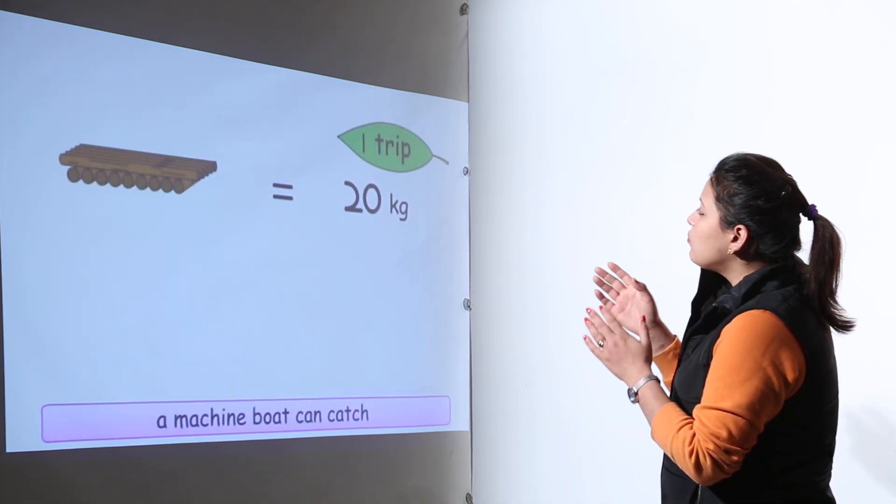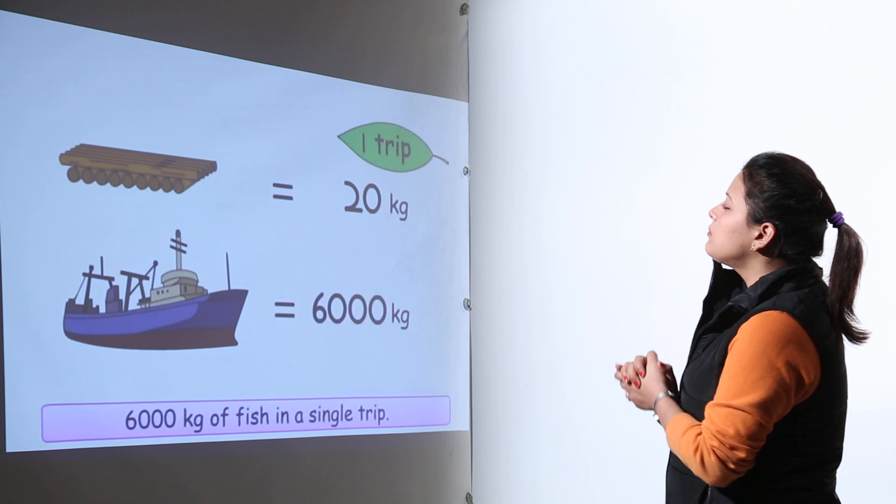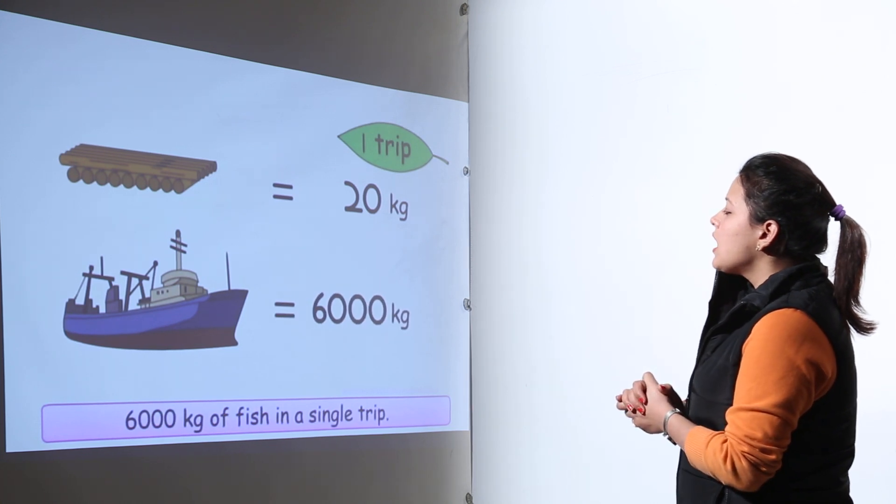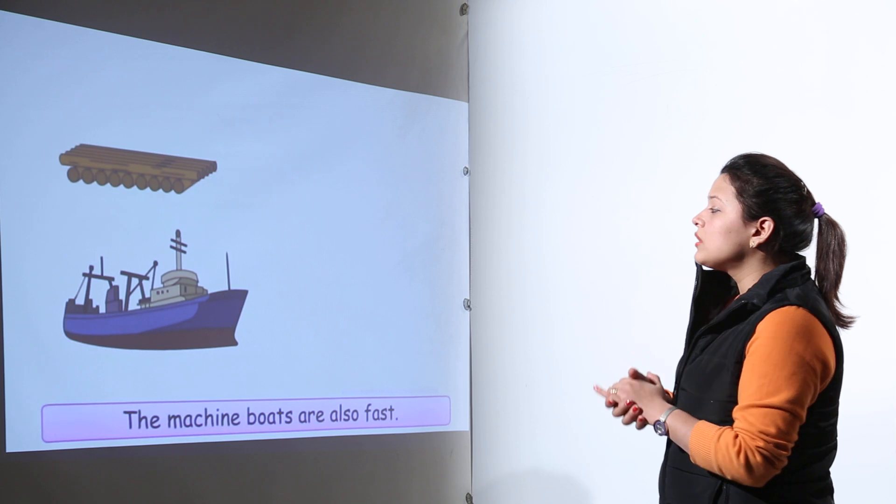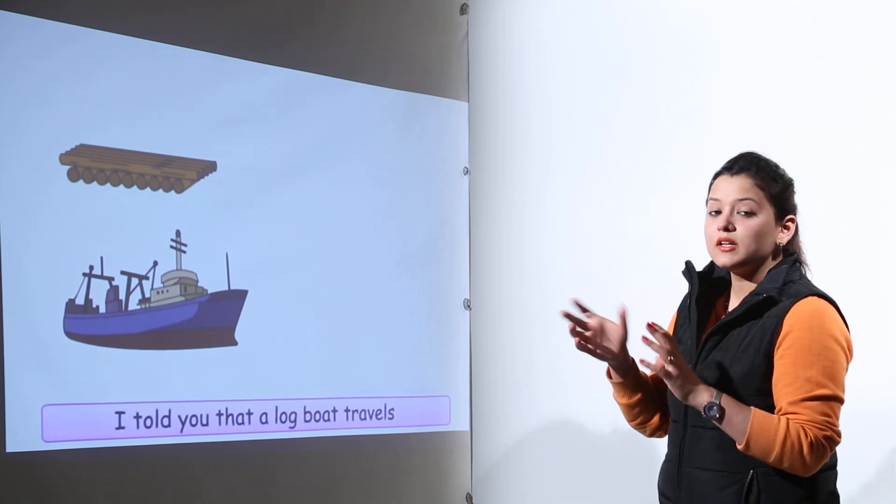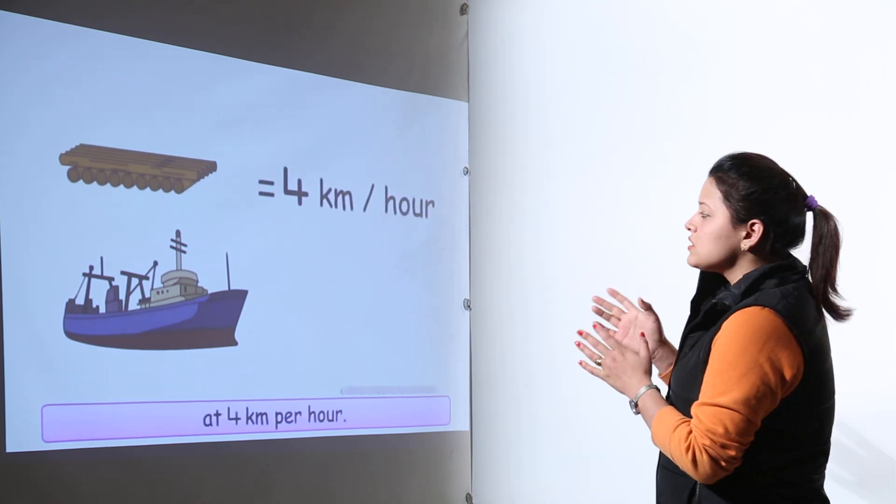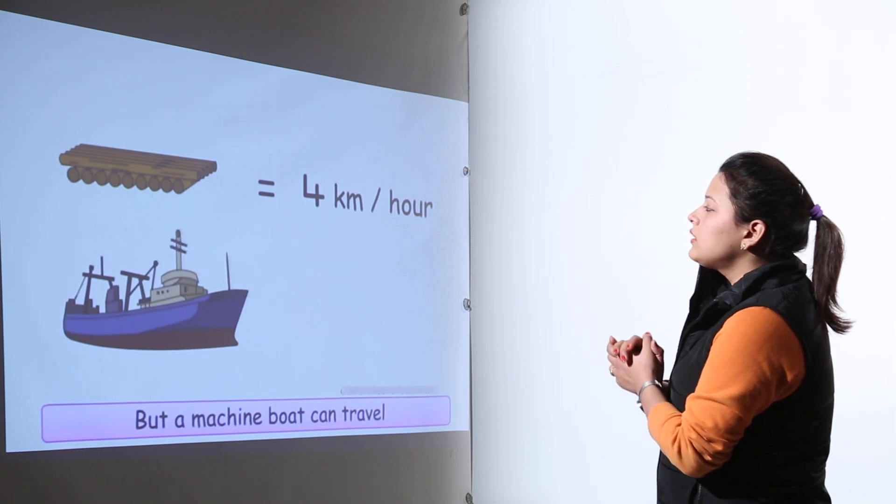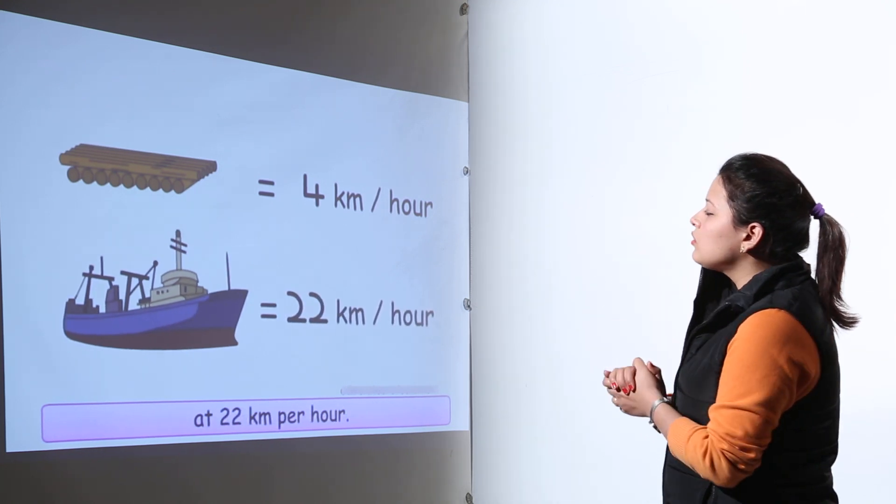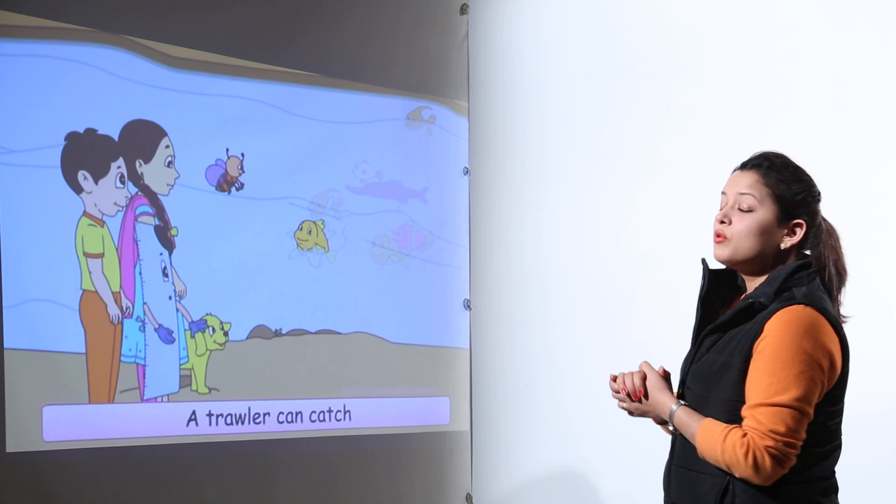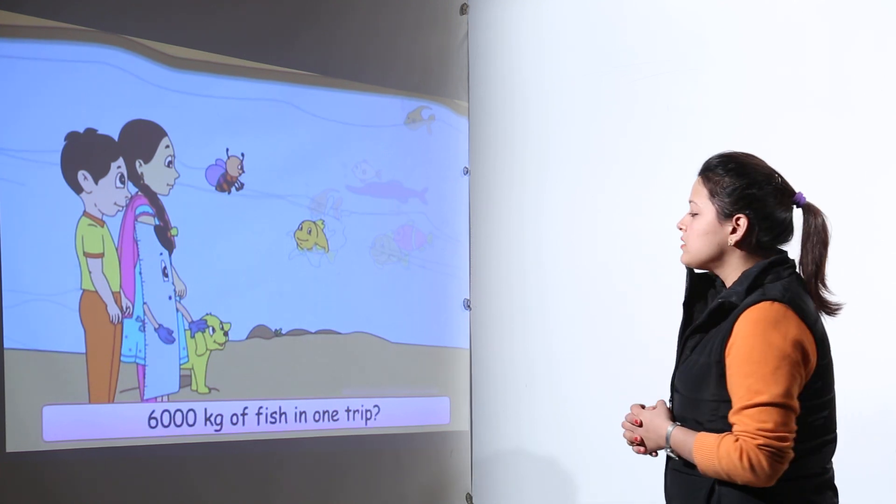In one trip if they are able to catch 20 kg and if the bigger ship is able to catch 6000 kg, you can compare the amount of fishes caught. A log boat, that is a smaller boat, travels 4 km per hour whereas a bigger boat will travel 22 km per hour.